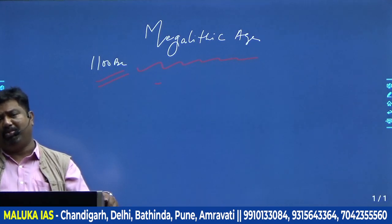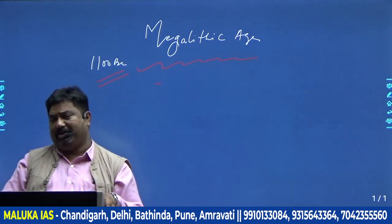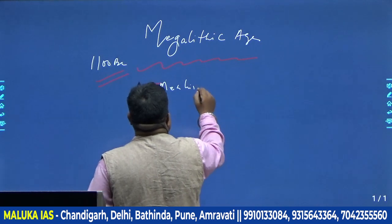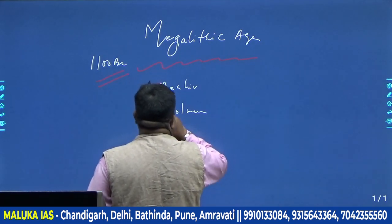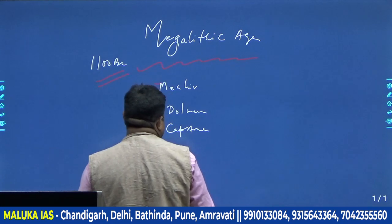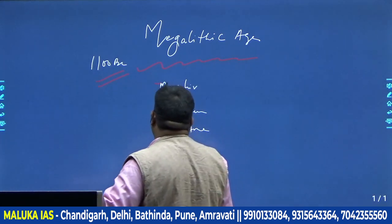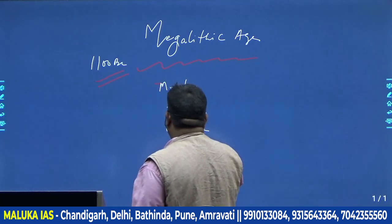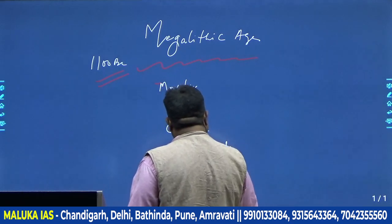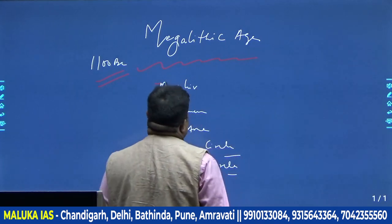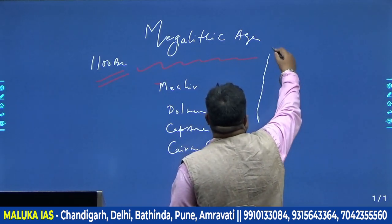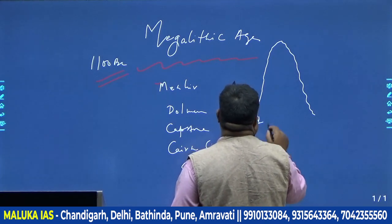The point is: what are the different forms of burial and why do these different forms exist? There are different structures known as menhir, dolmen, and capstone. There are also stone circles — different forms of structure we find. A menhir is a tall rock placed upright, and underneath it you will have a burial.